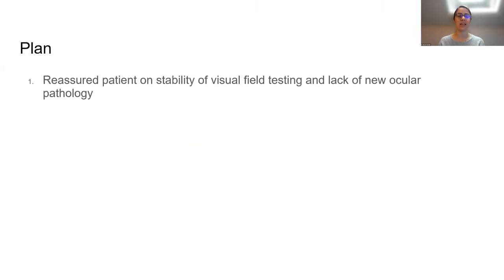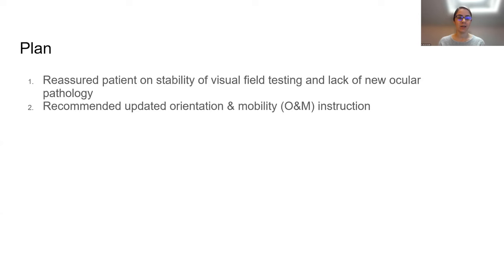Our plan was first and foremost to reassure the patient on the stability of her visual field testing and the lack of new ocular pathology. While we were glad she had no new eye problems, we needed to do all we could to improve her function. We recommended updated orientation and mobility training, since she was having trouble with tripping and bumping into things, and updating the strategies put in place nine years ago should be helpful.